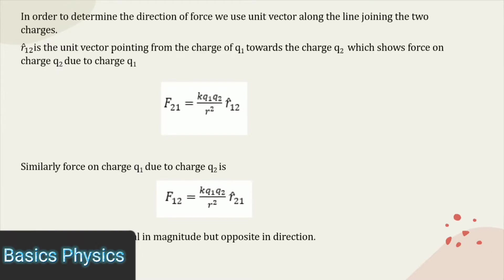In order to determine the direction of force, we use a unit vector along the line joining the two charges. If R12 is the unit vector pointing from charge Q1 towards charge Q2, it shows the force on Q2 due to charge Q1.